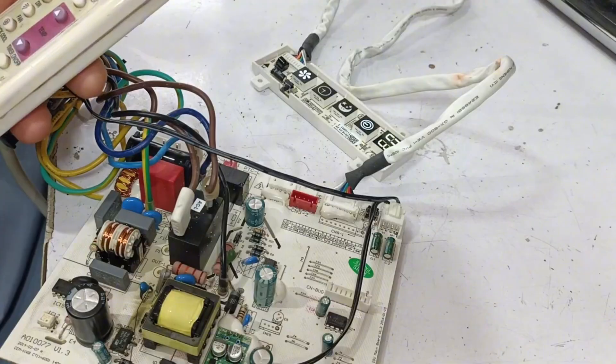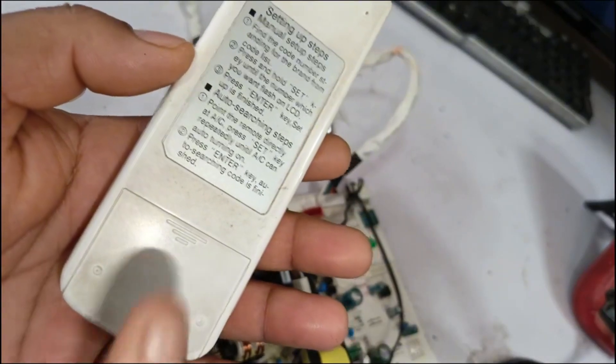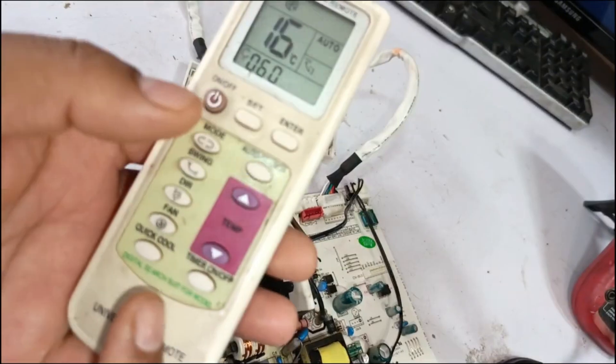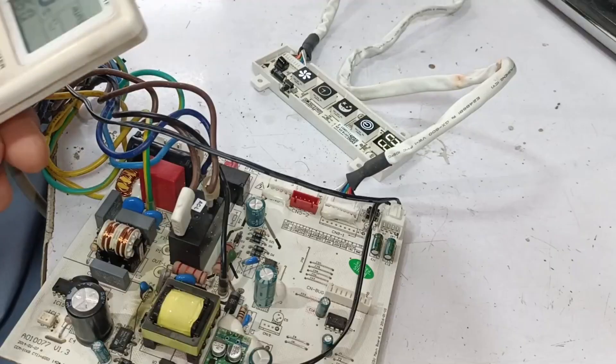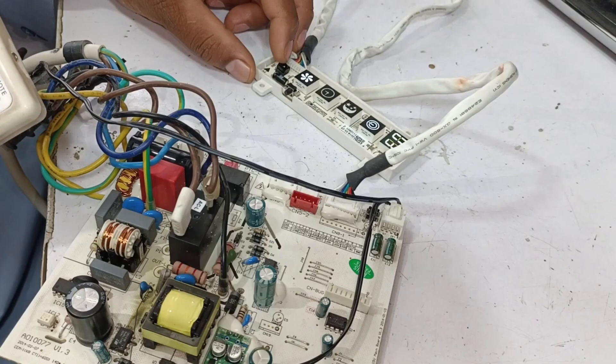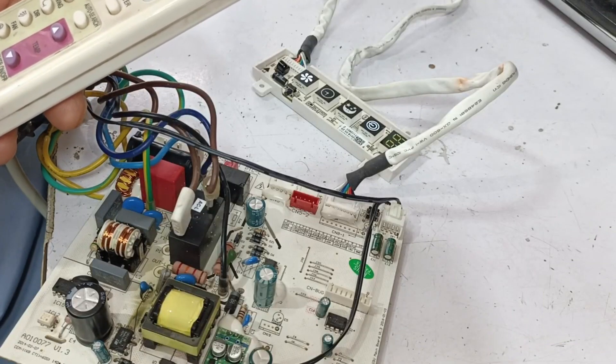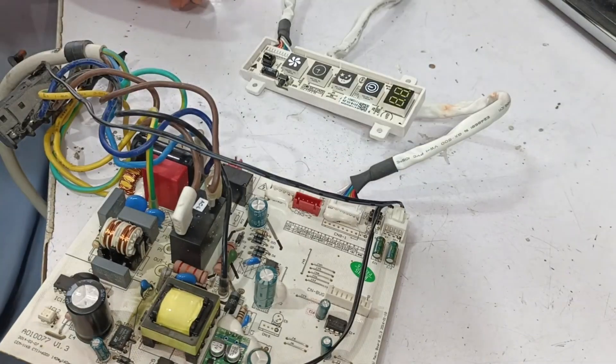Sometimes, if the remote hasn't had its batteries changed for a long time, it may not work from a distance due to weak batteries. If the PCB had a fault, it would either work or not work at all. There are only two possibilities. At the moment, it seems fine to me. However, if the customer still complains, we will check it again. But for now, we have repaired the PCB successfully.